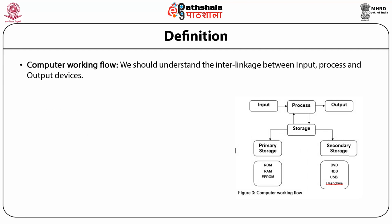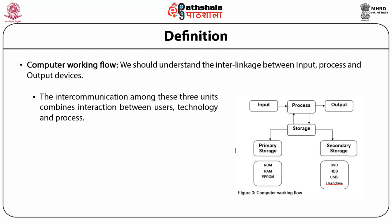The computer working flow shows the interlinkage between input, process, and output devices. Processing is directly linked with storage, which is of two categories: primary storage and secondary storage. Primary storage incorporates ROM, RAM, and EPROM. Secondary storage consists of DVD, HDD, USB, and flash drives.